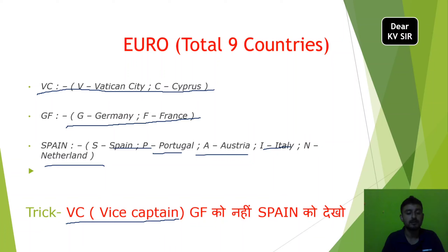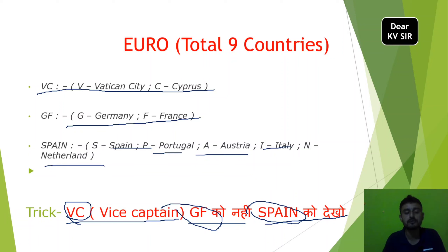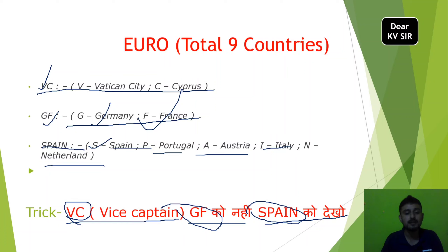The mnemonic trick is VC GF Spain. V for Vatican City, C for Cyprus, G for Germany, F for France, S for Spain, P for Portugal, A for Austria, I for Italy, and N for Netherlands. This is the Euro currency.